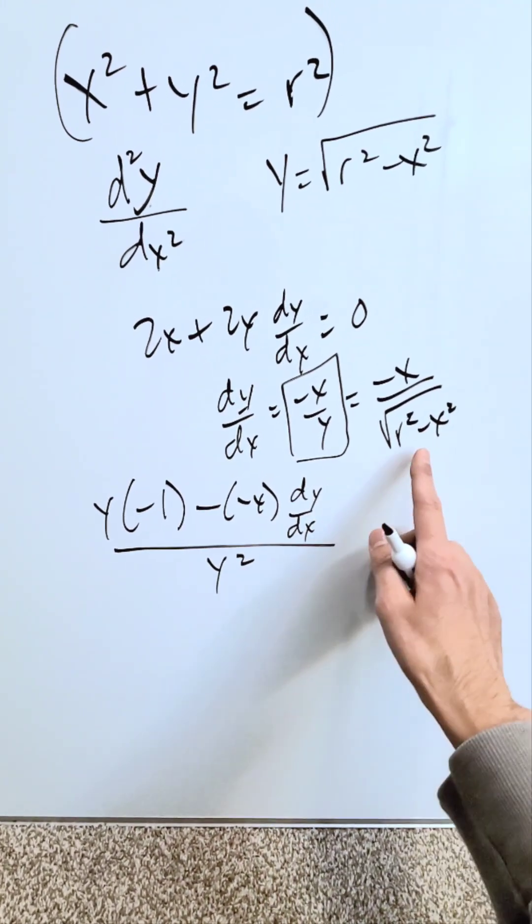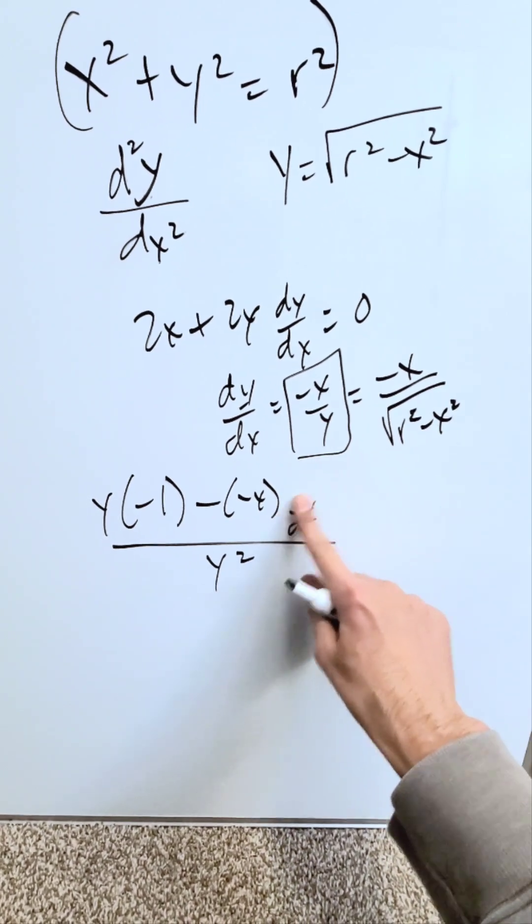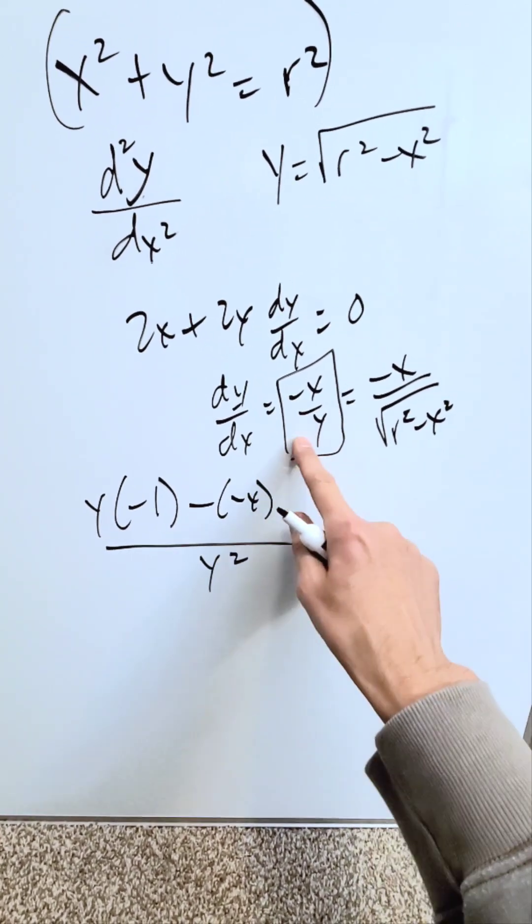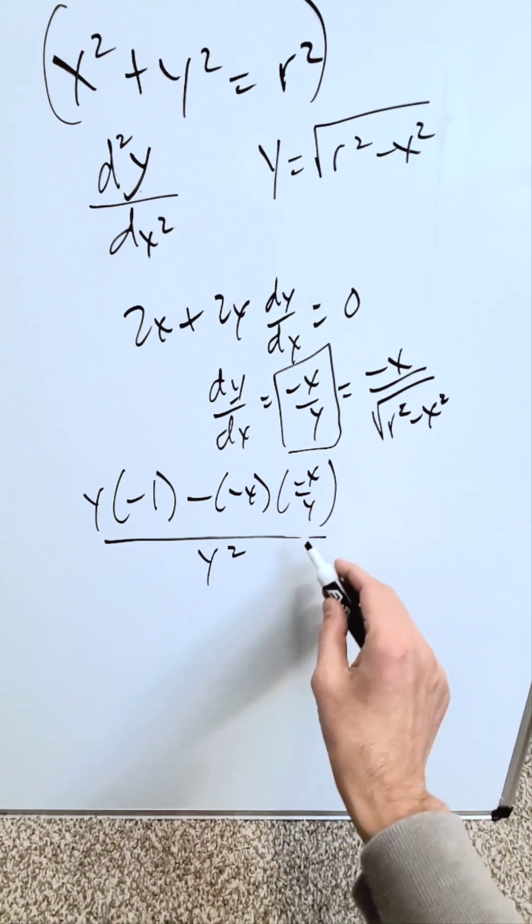Now resubstitute dy/dx. What is it? It's this or it's this. It can be easier just to bring this here, minus x over y, and I'll show you why.